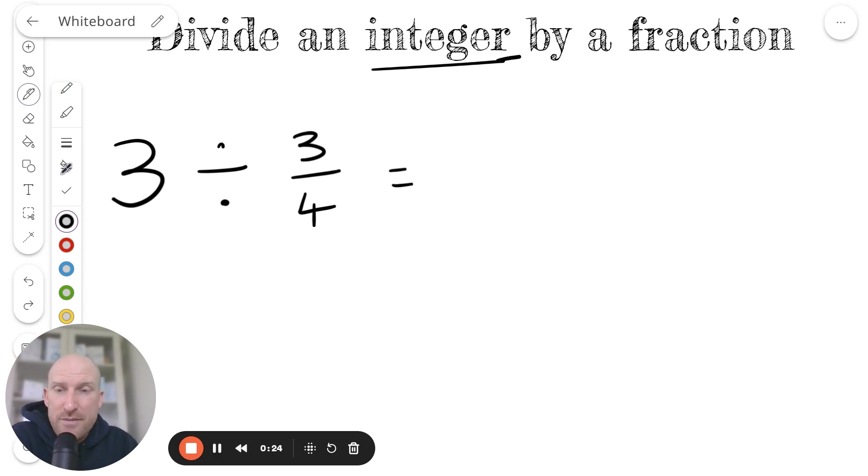So it's an integer. What we're going to do to solve these questions is use this system, which is CFM. The C stands for change, the F stands for flip, and the M stands for multiply.